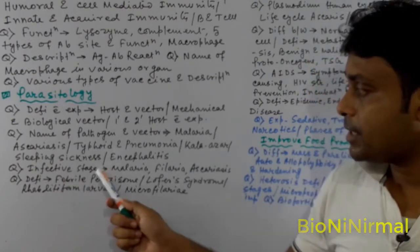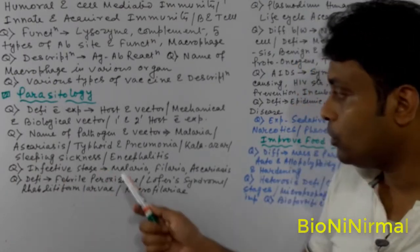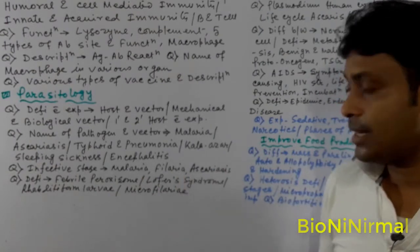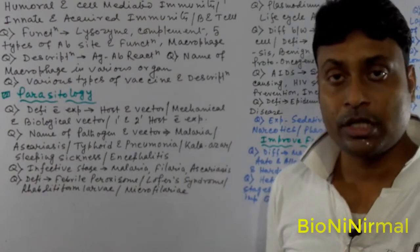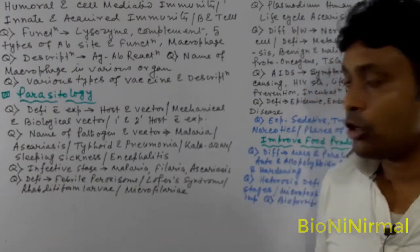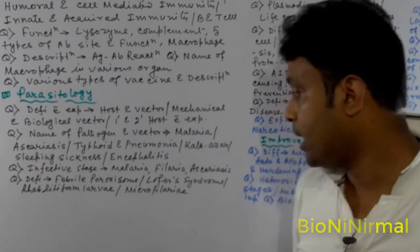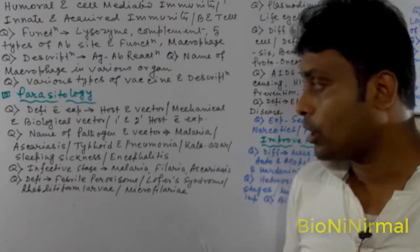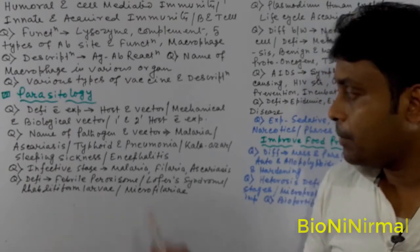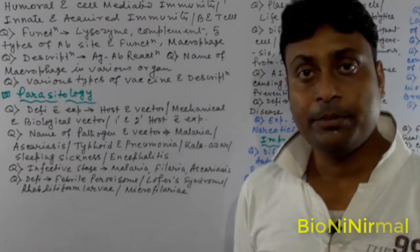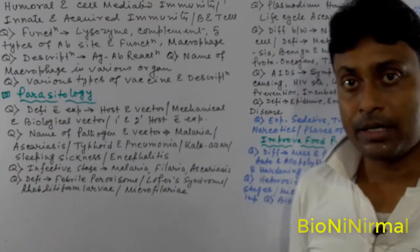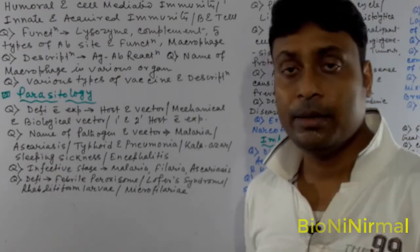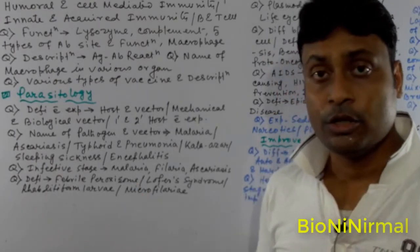Next, infective stage. For Malaria — sporozoite. For Filaria — microfilaria. For Ascariasis — rhabditiform larva. Definition of febrile paroxysm and malaria symptoms — febrile paroxysm — this is a very, very important question from 2019.